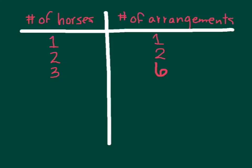With four horses, there are 24 possible arrangements. Now I want to look for patterns in the table. I can look across the table — one times one is one, one plus zero is one — but that pattern doesn't continue for three: three times one is not six, three divided by one is not six, three plus or minus zero is not six. So I need to look for patterns in another direction.